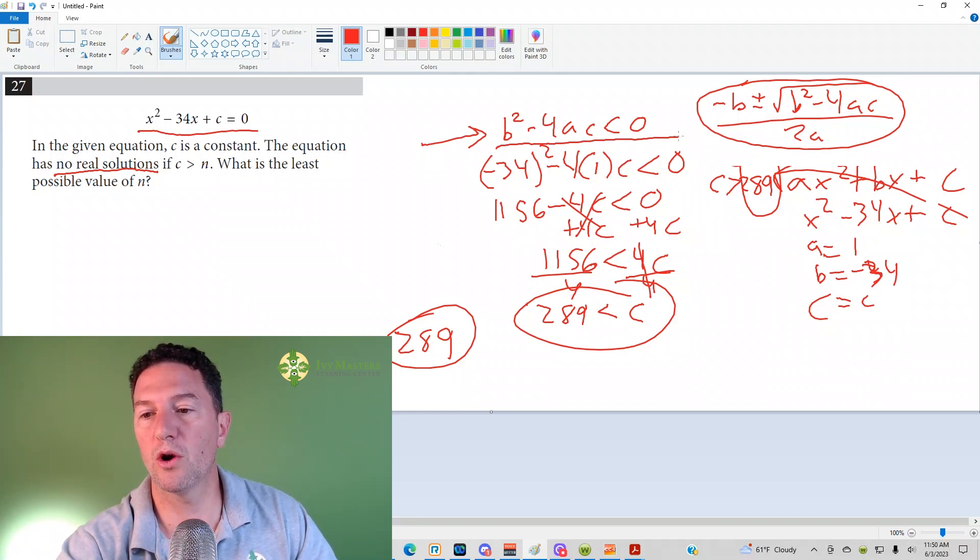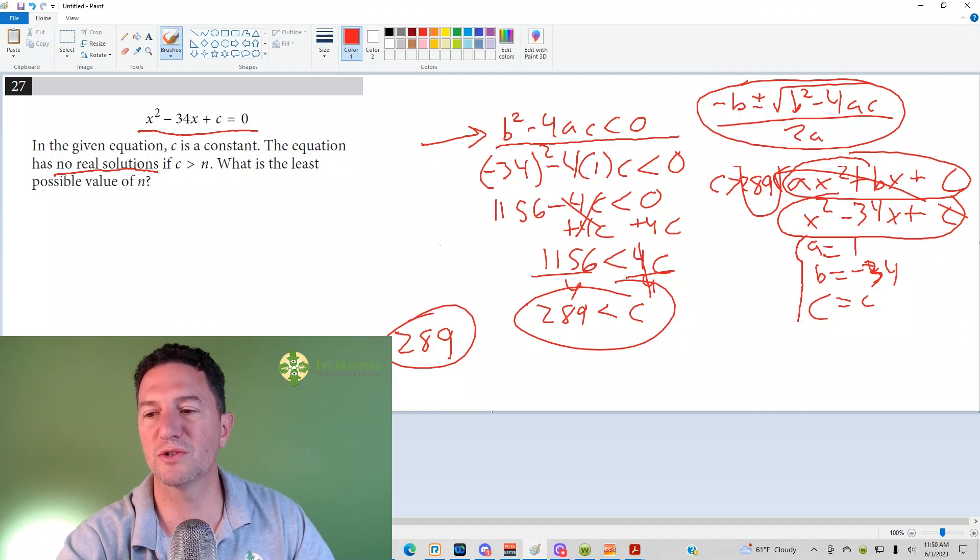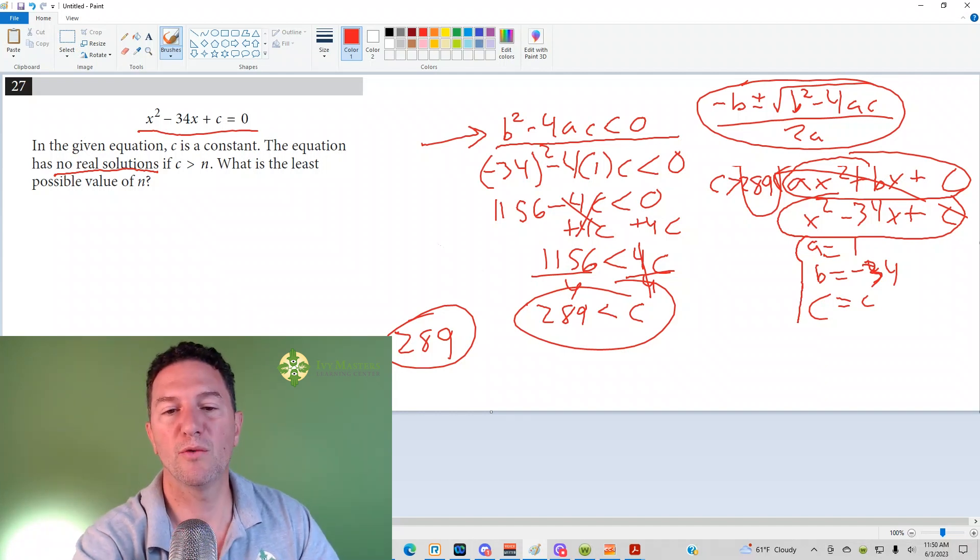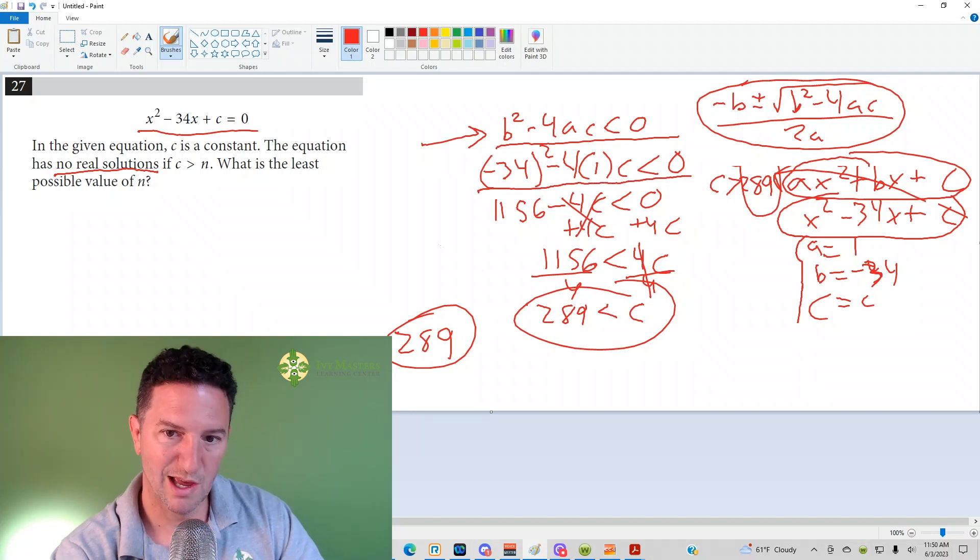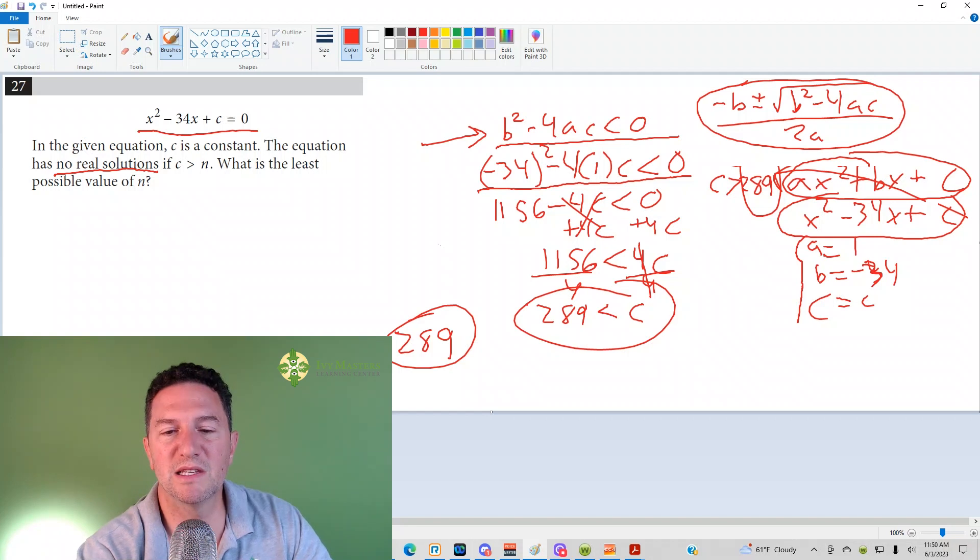When you're in the form ax squared plus bx plus c, if we put our equation that we're given here right underneath it, you can see that your a is 1, there's nothing next to the x squared so it's 1. Your b is negative 34, b is always attached to the x, and your c is just c. So if we plug those values in, negative 34 squared minus 4 times 1 times c is less than 0.